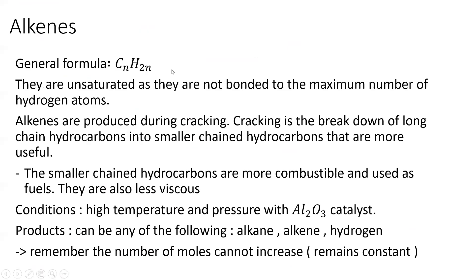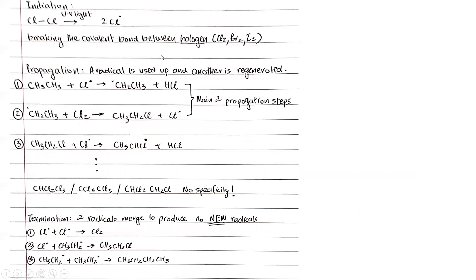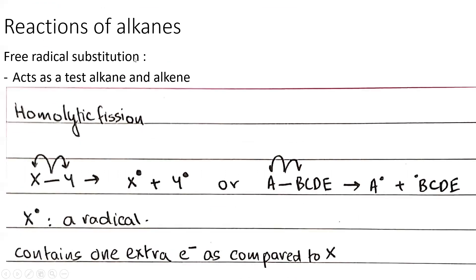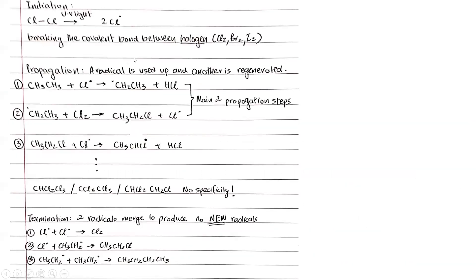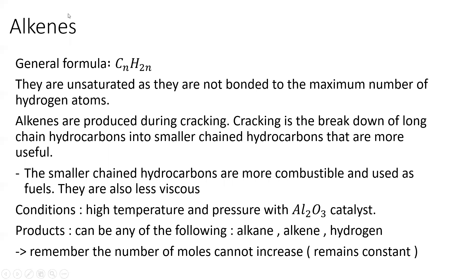Now for alkenes: the general formula is CnH2n. They are called unsaturated hydrocarbons because they're not bonded to the maximum number of hydrogen atoms — because they have a double bond, which can split and produce two more hydrogen bonds.